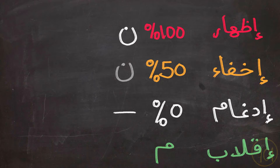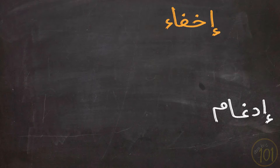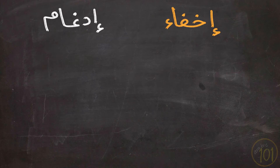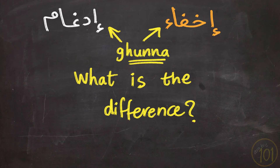This classification helps us understand the difference between two of the most important skills of Noon Sakinah: Ikhfa and Idgham. This is a very common issue among learners and a frequently asked question — what is the difference between Ikhfa and Idgham, since in both of them we have a Ghunna of two Harekat? Why are they not the same?